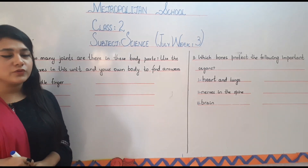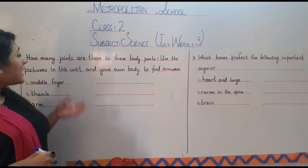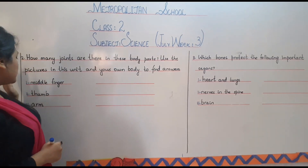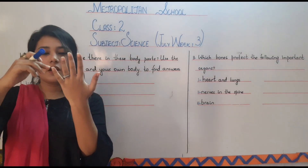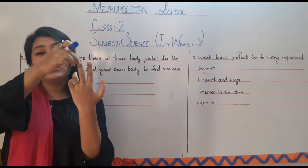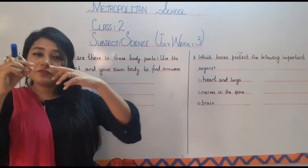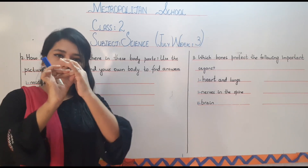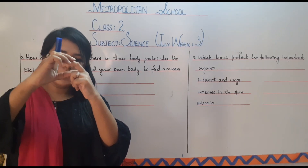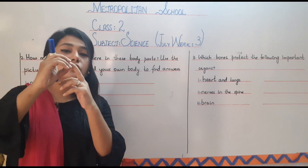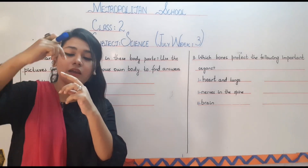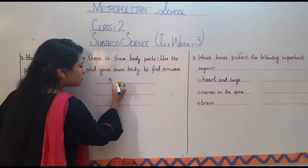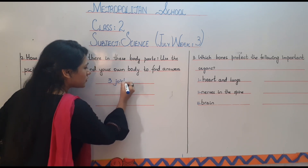After the first exercise we move to the second exercise, where we write how many joints are in each body part. The first one is our middle finger. Let's move this finger and find out — it bends from here, then from here, and then from here. So there are three joints in our middle finger.